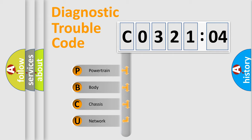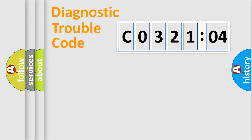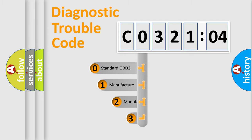We divide the electric system of automobile into the four basic units: Powertrain, Body, Chassis, and Network. This distribution is defined in the first character code.